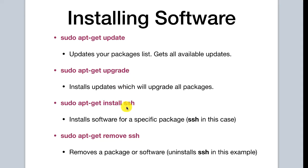If we are trying to install a specific software or package, we run sudo apt-get install and then the package name that we want to install. To remove the package, we would use sudo apt-get remove and the package name.